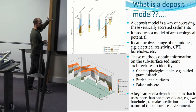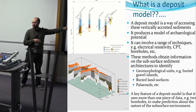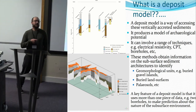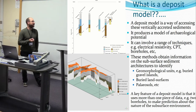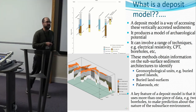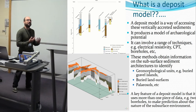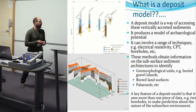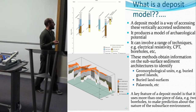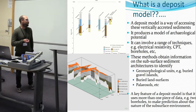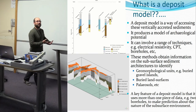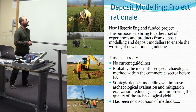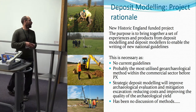I've put a couple of familiar examples here - boreholes at the top and some extrapolated cross-sections at the bottom. What we're doing is obtaining information on subsurface sediment architectures to identify things such as geomorphological units, buried gravel islands, buried terraces, land surfaces, and peat. We're not detecting archaeology directly - we are modeling subsurface sediments to use that as a proxy of archaeological potential. A key feature of a deposit model is using more than one set of data to create a prediction about the subsurface environment.